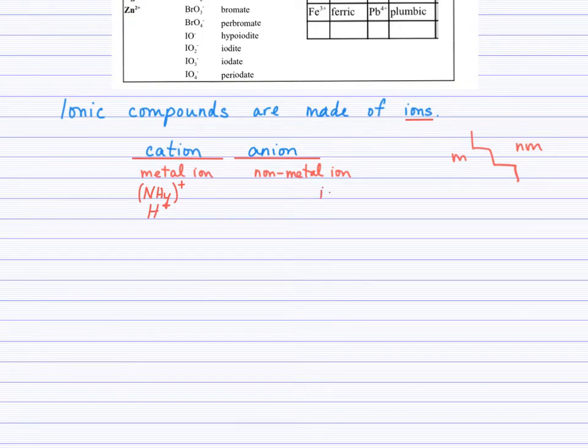For the anions, you will typically have an IDE ending. These will be for the binary ionic compounds. But occasionally, you will also see ATE, ITE, some other endings. Even occasionally, there is an IDE ending, for example, cyanide or hydroxide. But you will see the names of those on the polyatomic ion list. And so, it's very helpful for you to have that handy for reference.